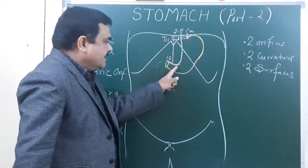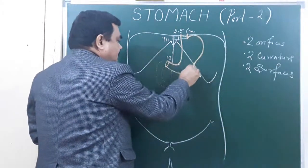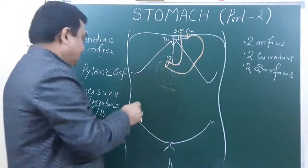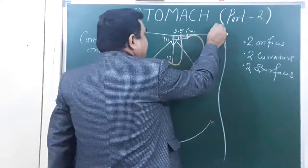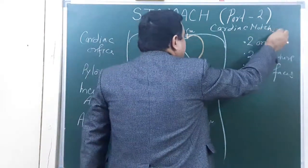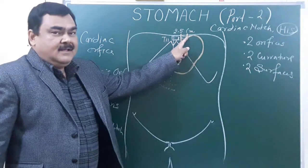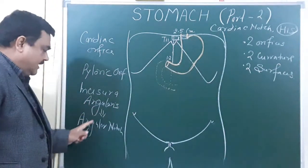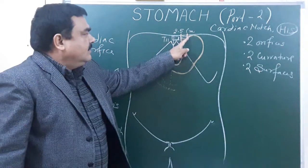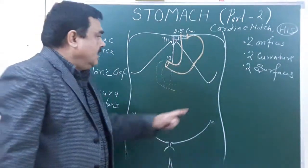The other curvature is the greater curvature. Along the greater curvature, a notch is present that is known as the cardiac notch, also called the angle of His. There are also two surfaces: the anterior surface facing anteriorly and superiorly, and the posterior surface facing posteriorly and inferiorly.